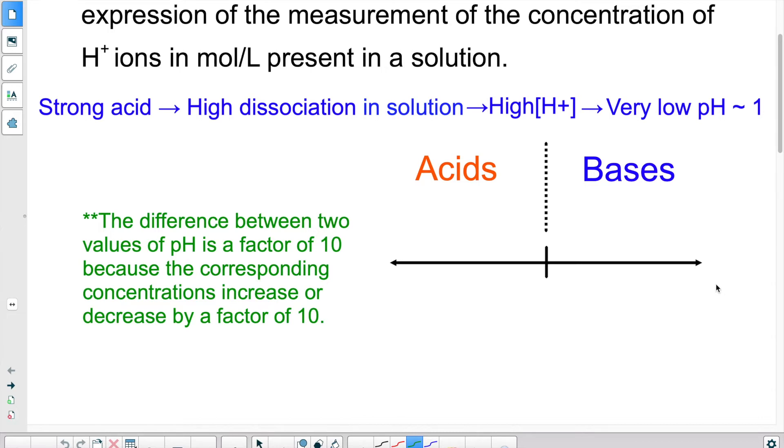We use the conventional one that goes from 1 to 14. So here when it says a very low pH is closer to 1, that's based on the conventional scale.